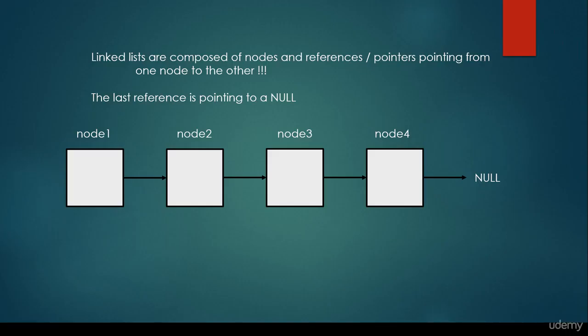What are LinkedLists? LinkedLists are composed of nodes and references or pointers pointing from one node to the other. Of course the last reference is pointing to a null, and basically it's very important because this is how we are able to detect that the last node is pointing to a null.